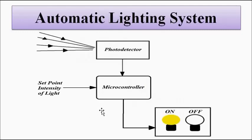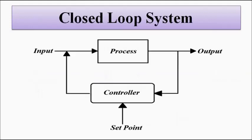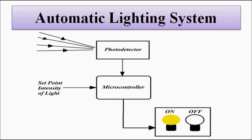Another example: on cloudy days, even during daytime the intensity of sunlight is very low, so the microcontroller will detect that and issue a signal to turn the light on. That becomes a closed loop system because it is taking feedback. This is a simple example of an open loop system versus a closed loop system — one that takes various other factors as feedback to execute a process in a better way. I hope you like this video. Please subscribe to my channel Engineering Tutorial for more videos related to electrical, electronics, instrumentation, and communication engineering. Thank you very much.